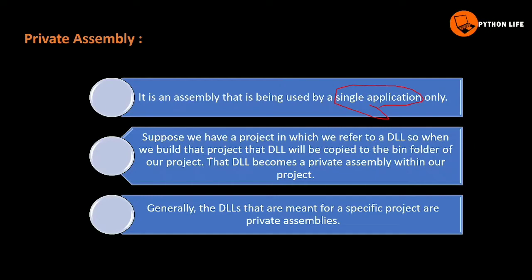There are two types. A private assembly is within our project. If it is normal, there are DLL files. If we create a project, it will be imported into the DLL file. If it is protected and private, it will be accessible only for the same class or project. Generally, DLLs that are meant for a specific project are private assemblies.